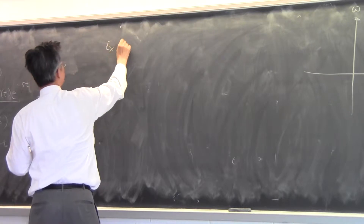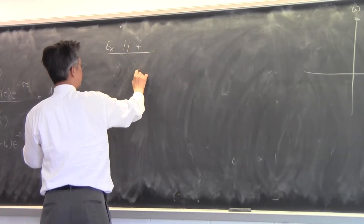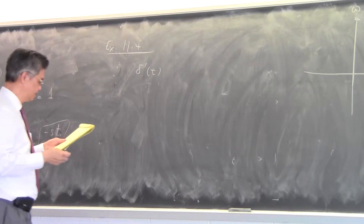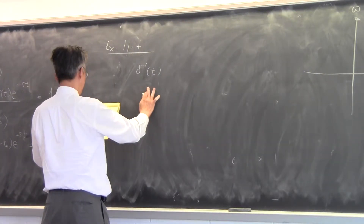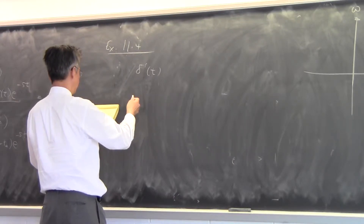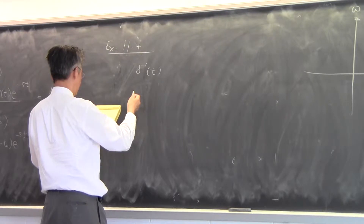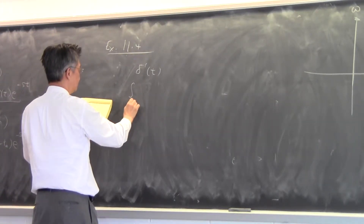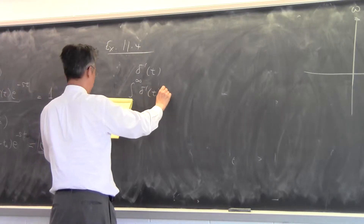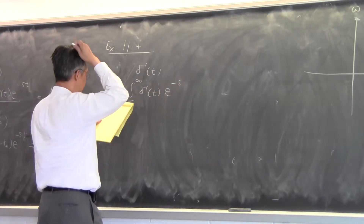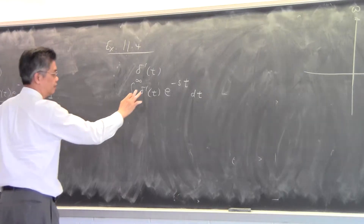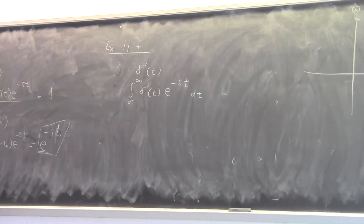Example 11.4: what is the Laplace transform of delta prime? We can do it a number of ways. We can find the Laplace transform by integrating delta prime of t times e to the minus s t dt. In order to integrate with the delta prime, we can use integration by parts.